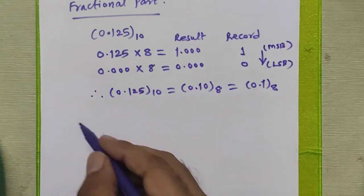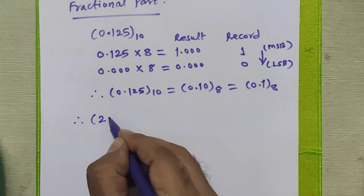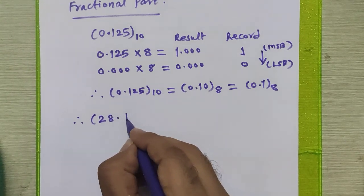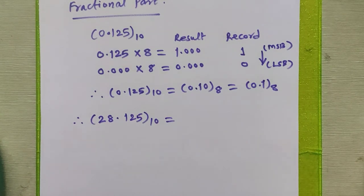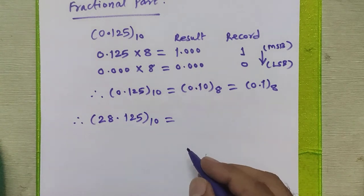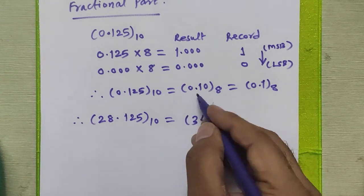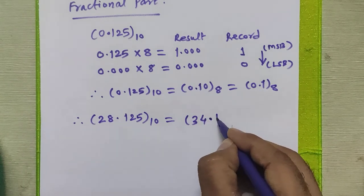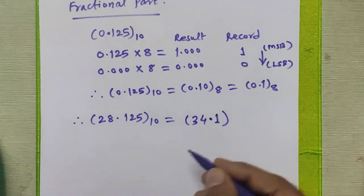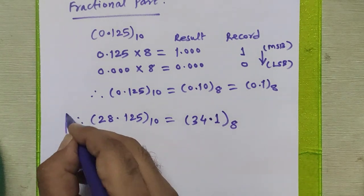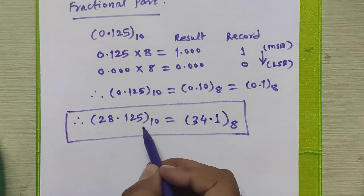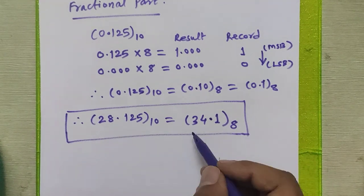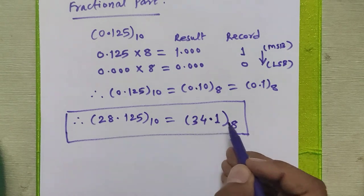To obtain our result, that is 28.125 decimal to octal, we need to combine both the parts, results of both the parts, integral part as well as fractional part. The result of integral part was 34 and the fractional part result is 0.1. So this is our final result for this problem. We have converted 28.125 decimal to octal and the octal equivalent for this number is 34.1.